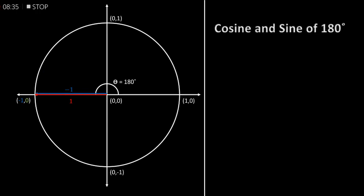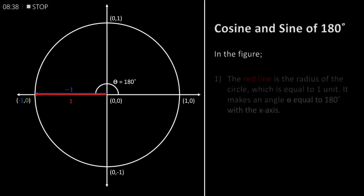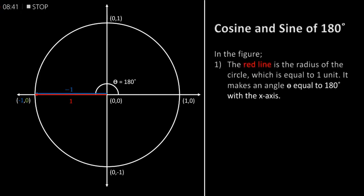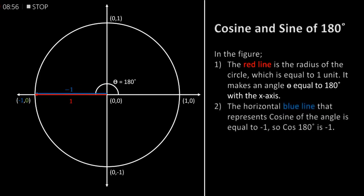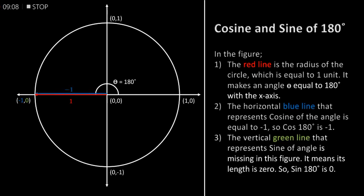Cosine and sine of 180 degrees. In the figure, the red line is the radius of the circle which is equal to 1 unit. It makes an angle theta equal to 180 degrees with the x-axis. The horizontal blue line that represents cosine of the angle is equal to minus 1, so cos of 180 degrees is equal to minus 1. The vertical green line that represents sine of the angle is missing in this figure — it means its length is 0 — so sin of 180 degrees is equal to 0.